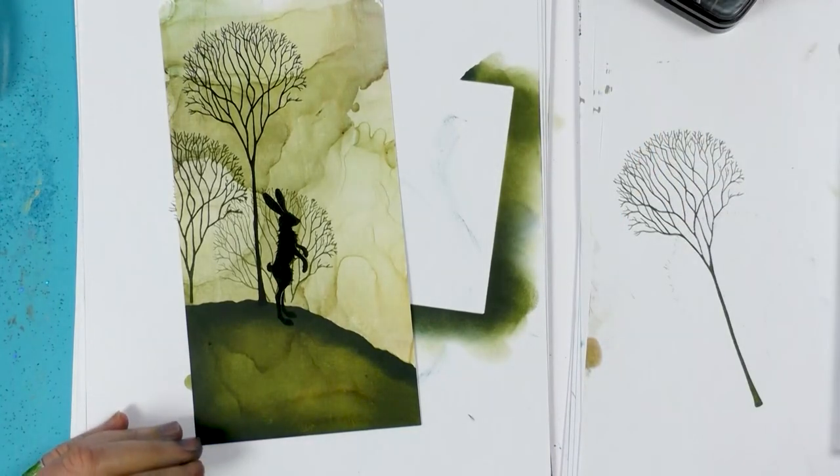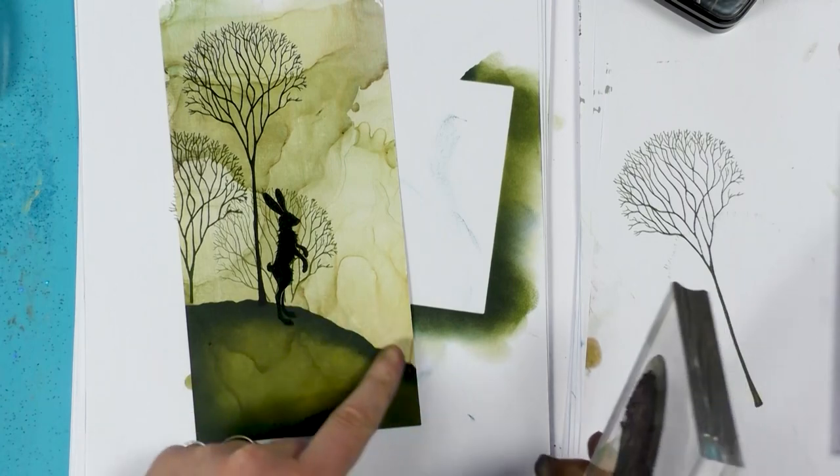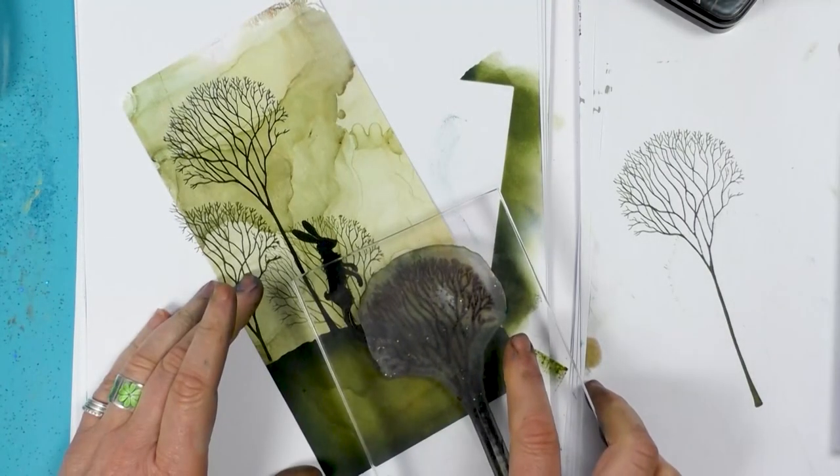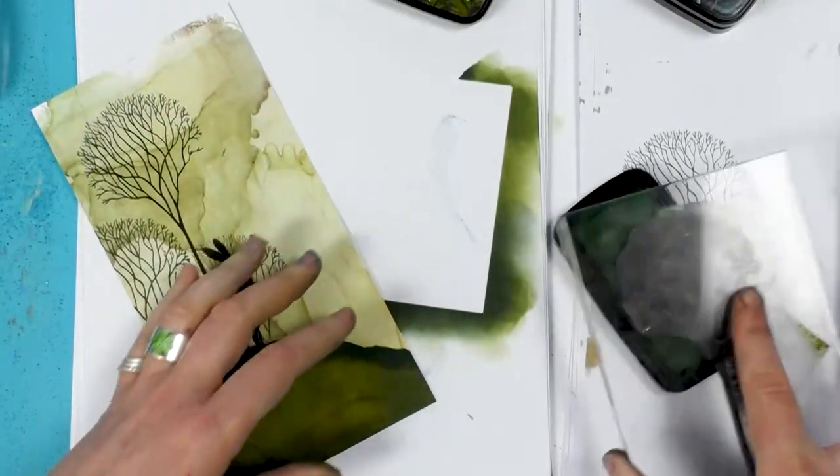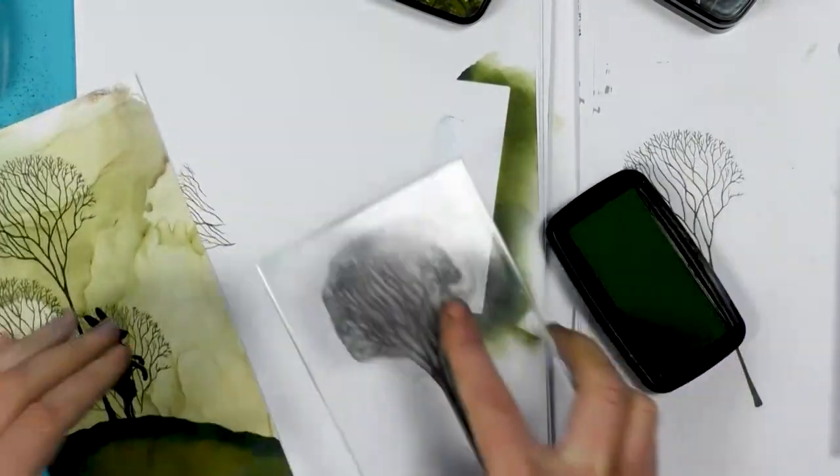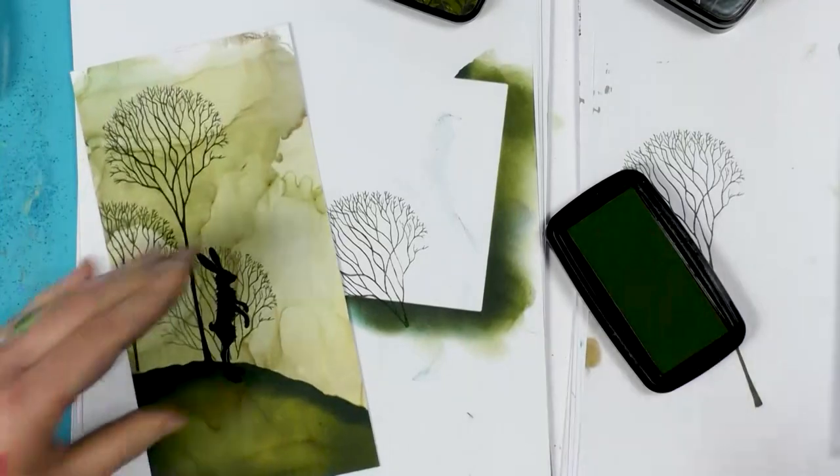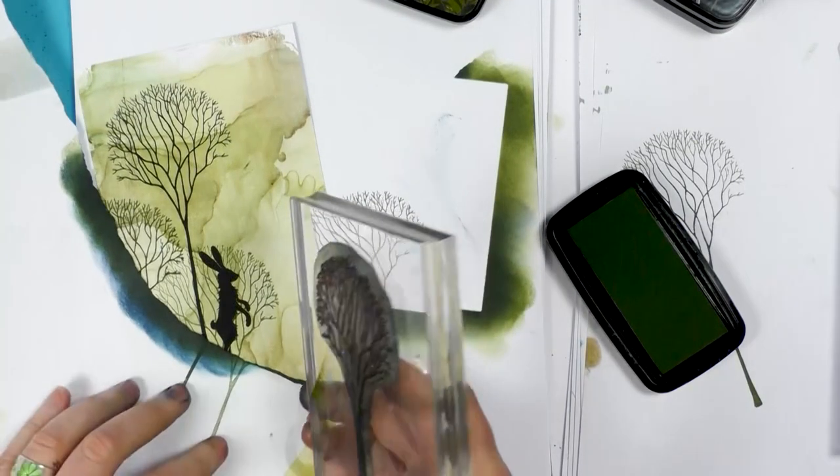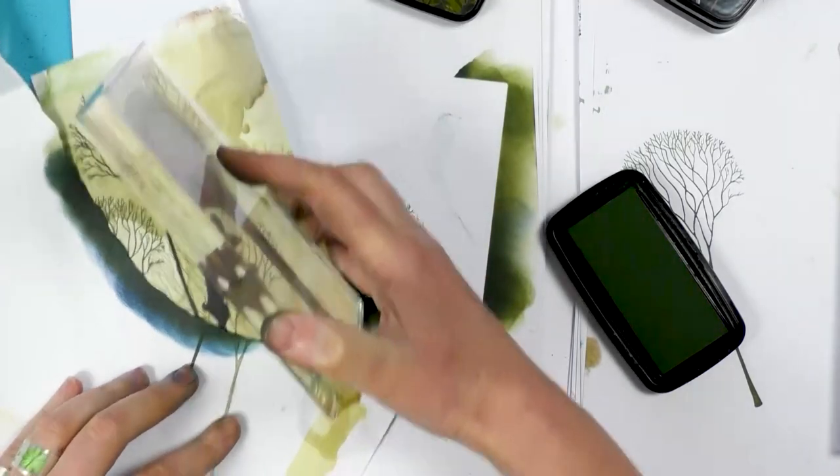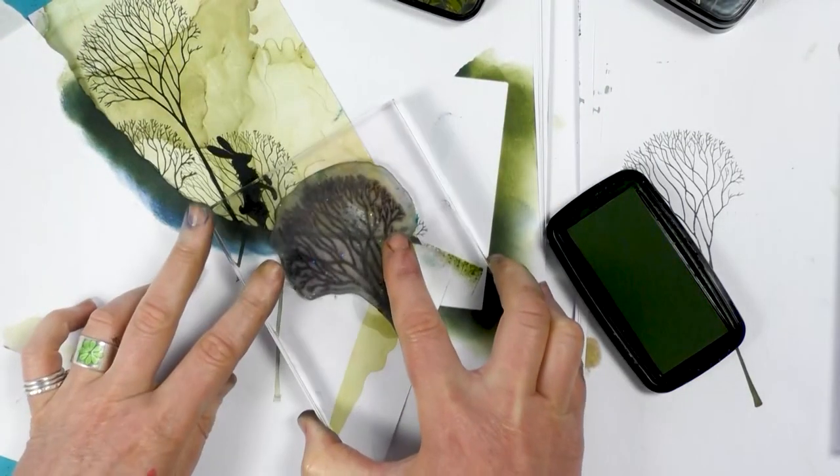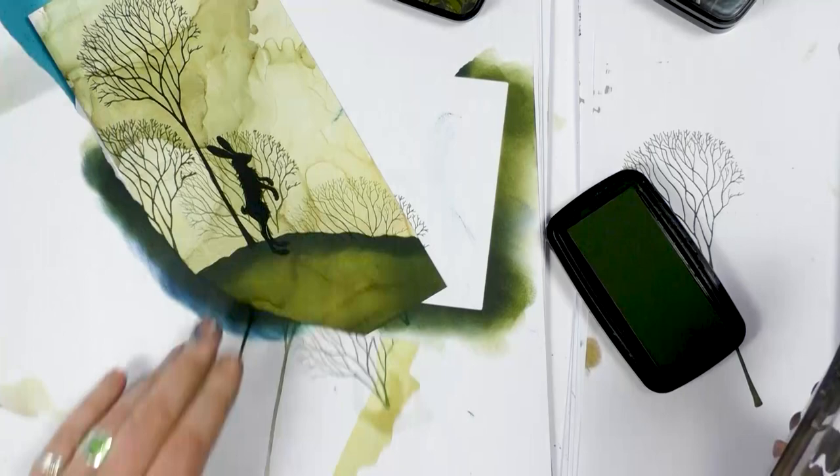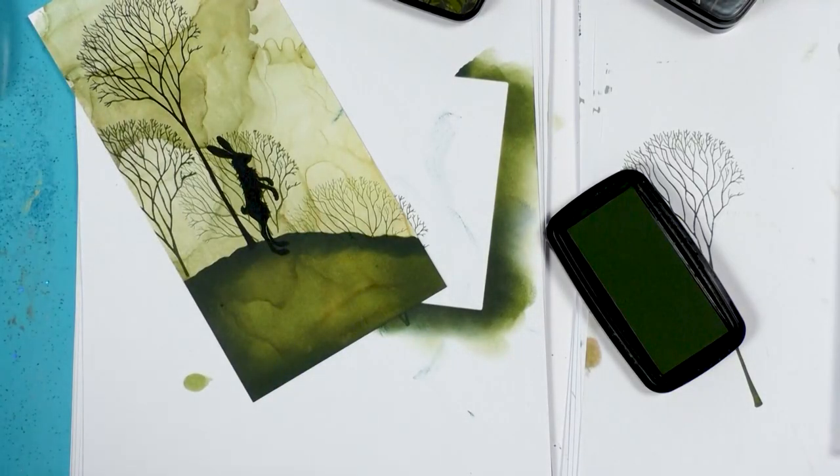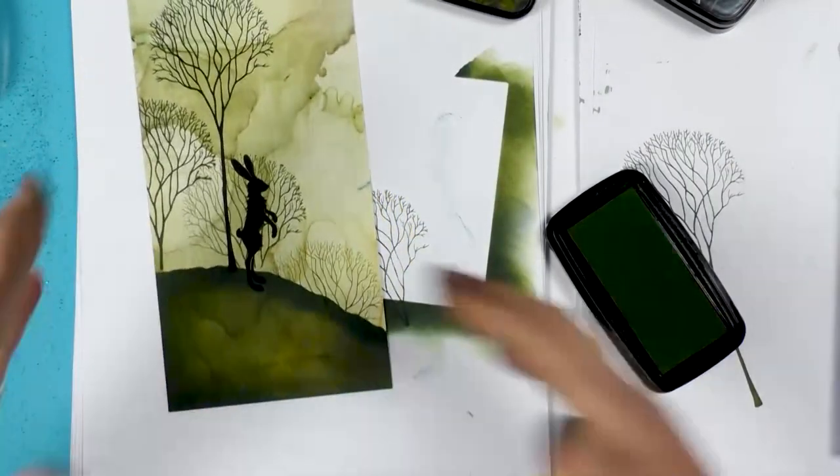So I'm going to put another tree down here as well. Okay. So I'm thinking that there's something a little bit more needed here. So I'm going to put another tree down here as well. I'm going to ink up, stamp off, mask that area off. There we go. That's better. Just give it a little bit more of a balance.